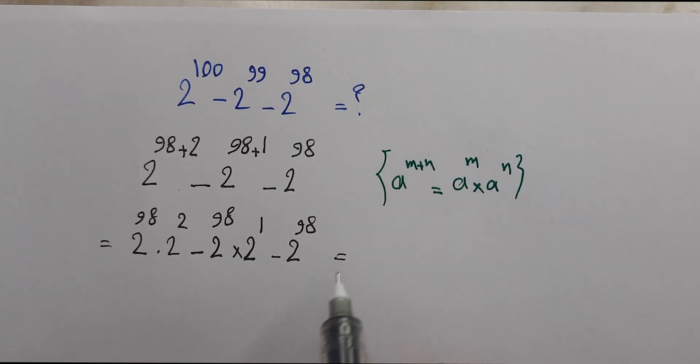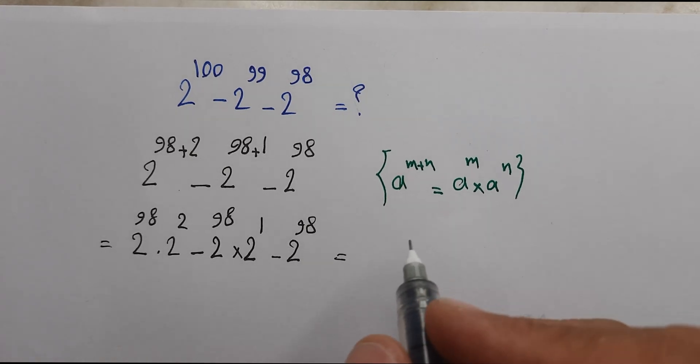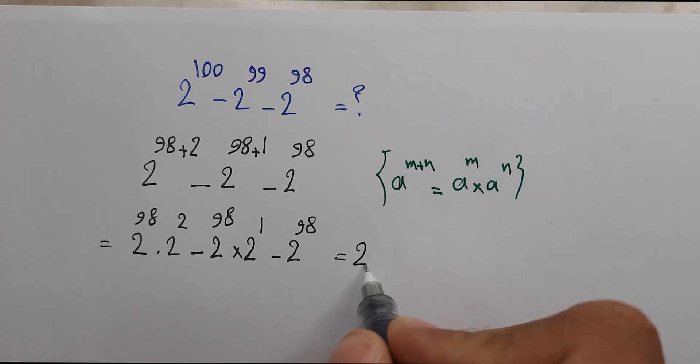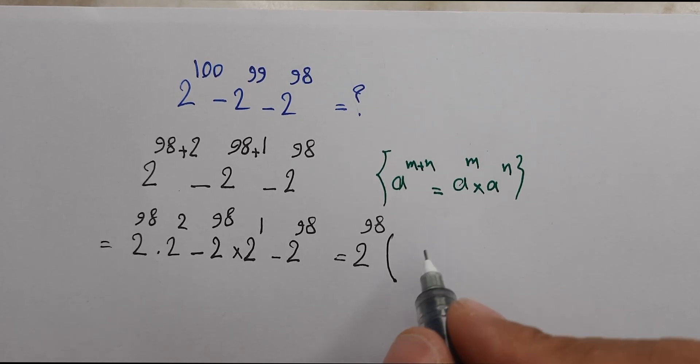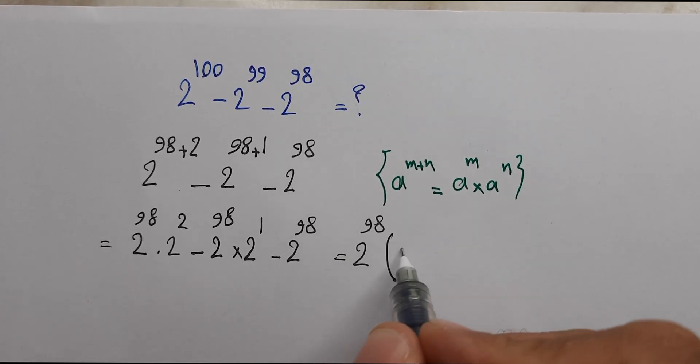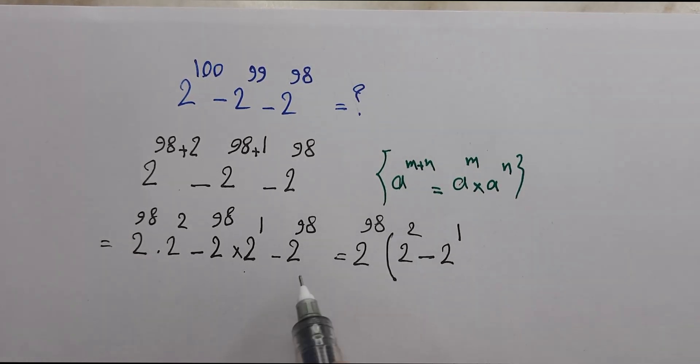As you see, 2 power 98 is common here and we can take it out: 2 power 98 times, here we have 2 power 2 minus here 2 power 1 and here minus 1.